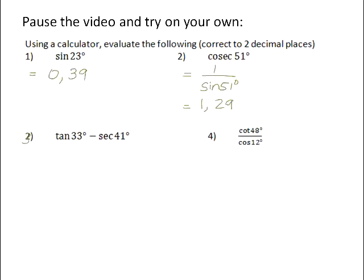Number three, tan of 33 degrees minus the secant of 41 degrees. Tan of 33 is easy. You can work that out on your calculator straight away because you have a tan button. But secant of 41, you don't have a button. So you have to work with the reciprocal. And the reciprocal ratio is cos. So the secant of 41 will be 1 over the cosine of 41. And if you punch that into your calculator, you get negative 0.68.